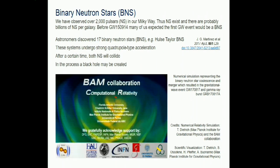A black hole is a very simple system - you only need a mass, a spin, and maybe charge; it is like an elementary particle. You merge two together and do a two-body calculation. Only in 2005 did people first manage to do that numerically, at Princeton. Since then we can do these calculations quite rapidly for black holes.